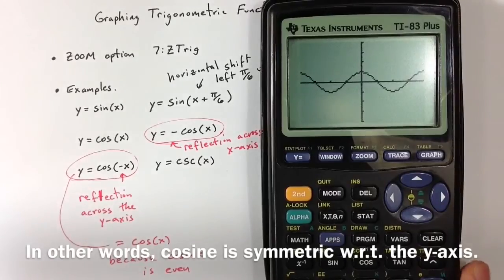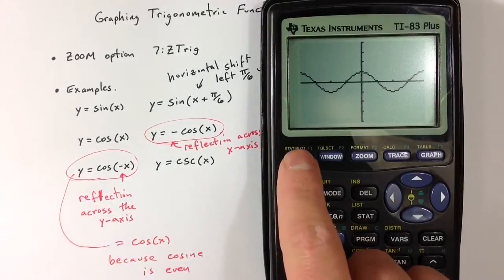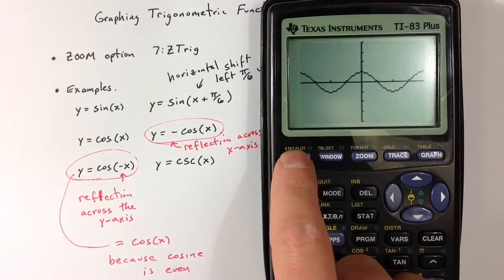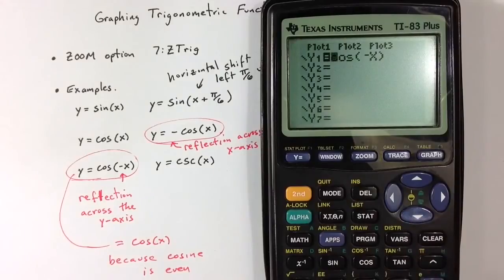Let's look at one more graph, the graph of cosecant of x. So cosecant is 1 over sine of x. And so to create that graph, I would want to go to 1 and then divide it by sine of x.